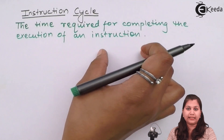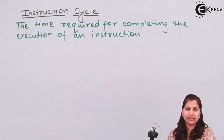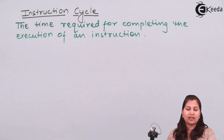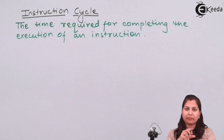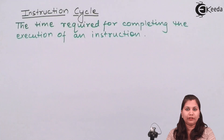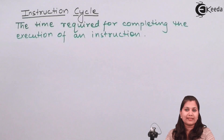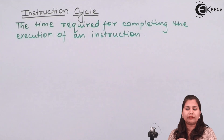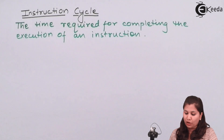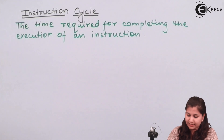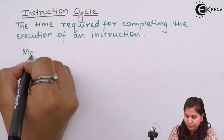This instruction cycle consists of many machine cycles. Because when an instruction is executed, it may involve reading data from some memory location or from an input-output port, or writing data into memory or to an input-output port, or adding or subtracting some numbers. So the execution of an instruction involves various steps, and we can say that the instruction cycle is divided into various machine cycles.